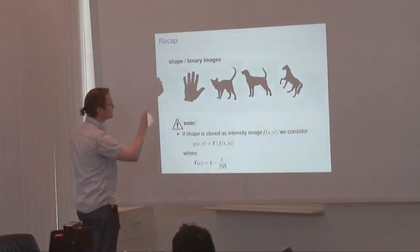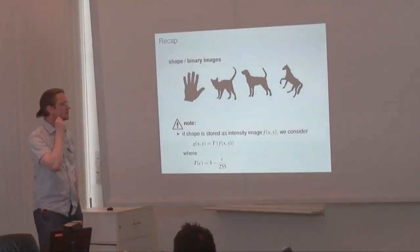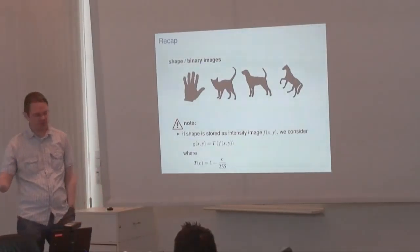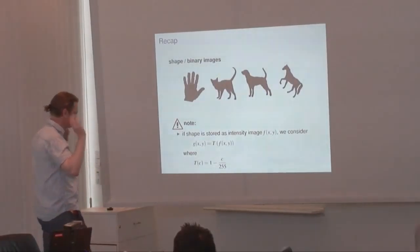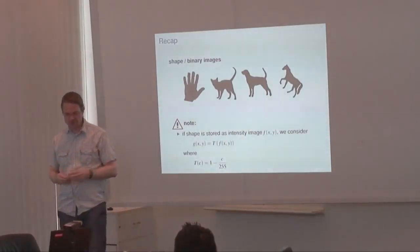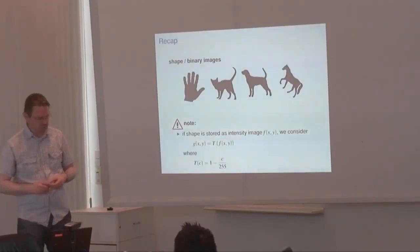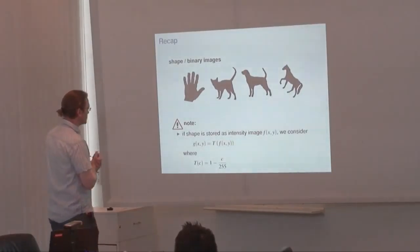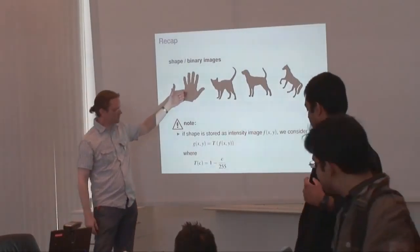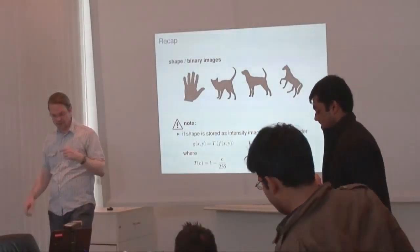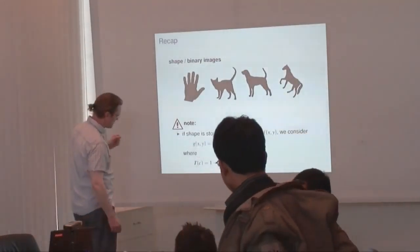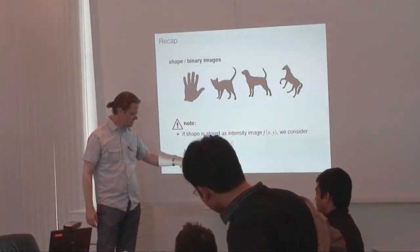These kinds of images, if you save them, you might save them in standard image formats — PNG, JPEG, whatever. So usually they are stored on disk as intensity images, grey value images. But if we are given such an intensity image where the foreground pixels are black and the background pixels are white, we can apply a transformation of the intensities or colors.